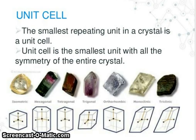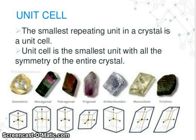Now, what is a unit cell? The smallest repeating unit in a crystal is a unit cell. A unit cell is the smallest unit with all the symmetry of the entire crystal.